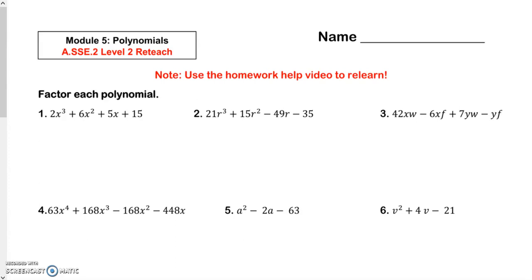After each polynomial, always remember the golden rule is to always look for a GCF. I always look for that on every problem. So I look for a GCF out of all four terms. I don't see one, but I do see a GCF on the first two, because four terms means factor by grouping.